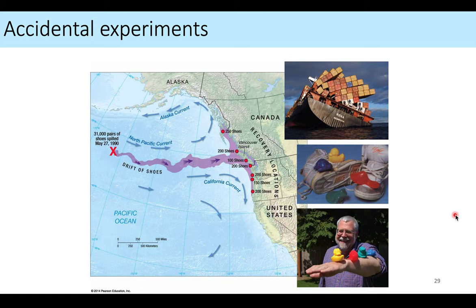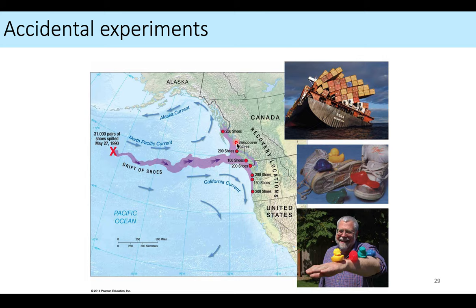There have been some accidental experiments for studying surface ocean circulation. In 1990, about 31,000 pairs of Nike shoes spilled off a container ship. Oceanographers used these shoes to learn that in the Pacific Northwest, ocean currents move almost directly toward the shore and then move in either direction. They tracked this by waiting to see where the Nike shoes washed up — finding them in Canada, Alaska, Washington, and Oregon.